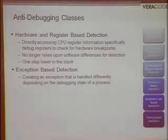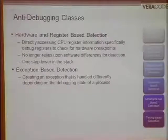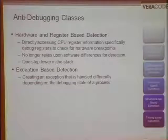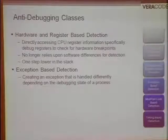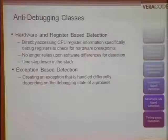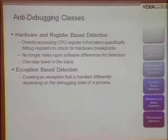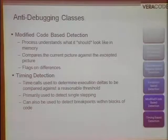Hardware and register-based detection uses registers and the CPU itself to detect the presence of a debugger — directly accessing processor components to check for things like hardware breakpoints and other assorted registers. We no longer have to rely on software-based discrepancies; we can look at the actual hardware registers on the chip. Exception-based detection looks for differences in exception handling depending on whether the process is running under a debugger or not — our code triggers the exception, and based on how it's handled we detect the debugger.